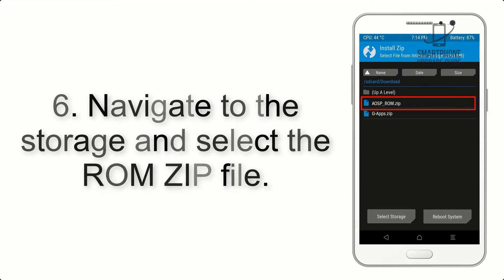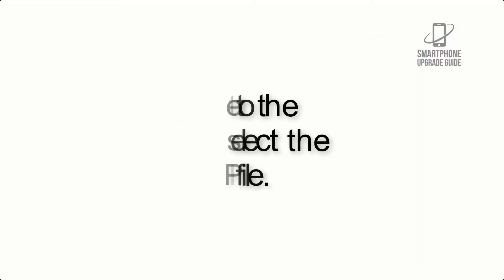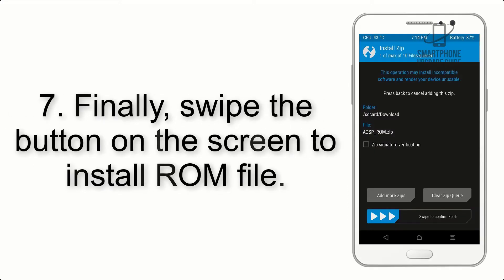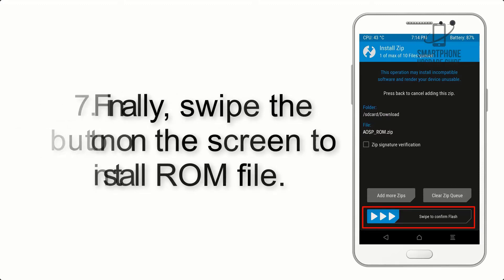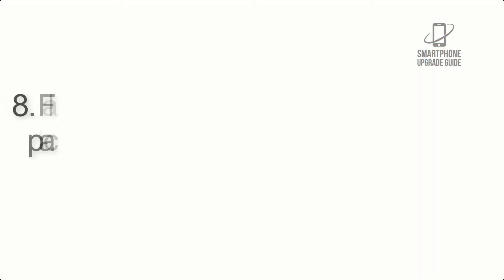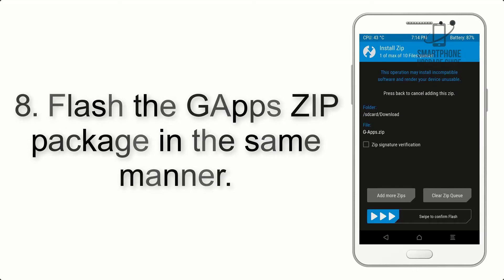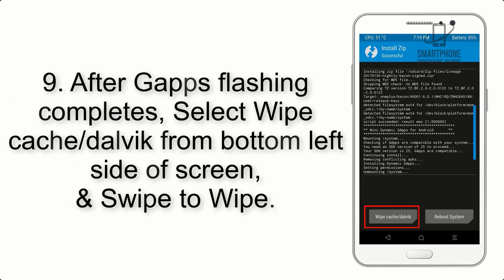Step 6: Navigate to the storage and select the ROM zip file. Step 7: Swipe the button on the screen to install the ROM file. Step 8: Flash the GApps zip package in the same manner.